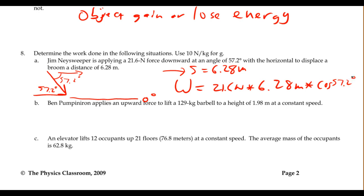So 21.6 multiplied by 6.28 multiplied by the cosine of 57.2. Just make sure you're in degree mode. And you'll get 73.481... a whole bunch of different numbers. We only have three significant figures, so that's going to be 73.5 joules. So the total work done is 73.5 joules.